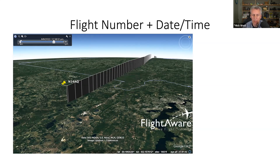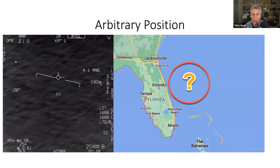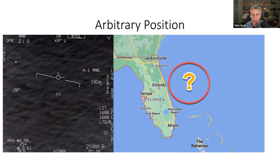Sometimes UAP are videoed from planes. If you can figure out the flight number and date, you can download the ADS-B data — the track of the actual location — and use the exact time from EXIF data or geolocate by looking out the window at distinctive patterns of fields, roads, and mountains. Sometimes you don't have a location at all, as with the GoFast video off the coast of Florida. In that case, we pick an arbitrary start point in the general area and use the known altitude, working with high-accuracy relative positions from there.